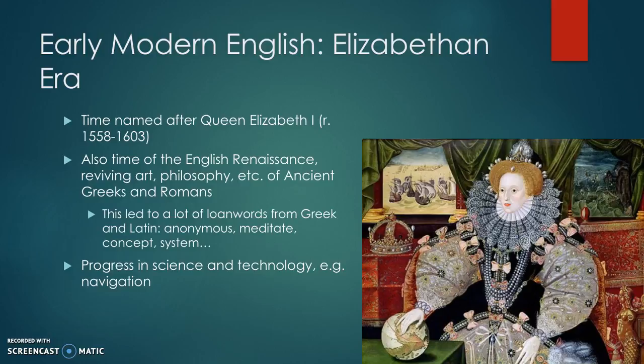Queen Elizabeth the First was queen between 1558 and 1603. It was also the time of the English Renaissance, a period where the art and philosophy of ancient Greeks and Romans were revived and brought back to Western Europe. This led to a bunch of loanwords from Greek and Latin, for example: anonymous, meditate, concept, and system. It was also a time that saw progress in science and technology, for example in navigation.